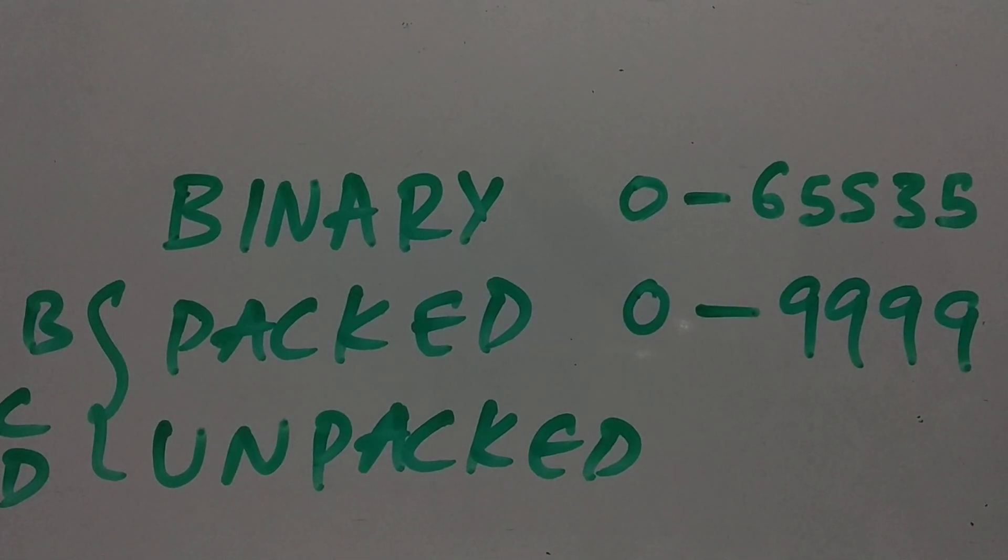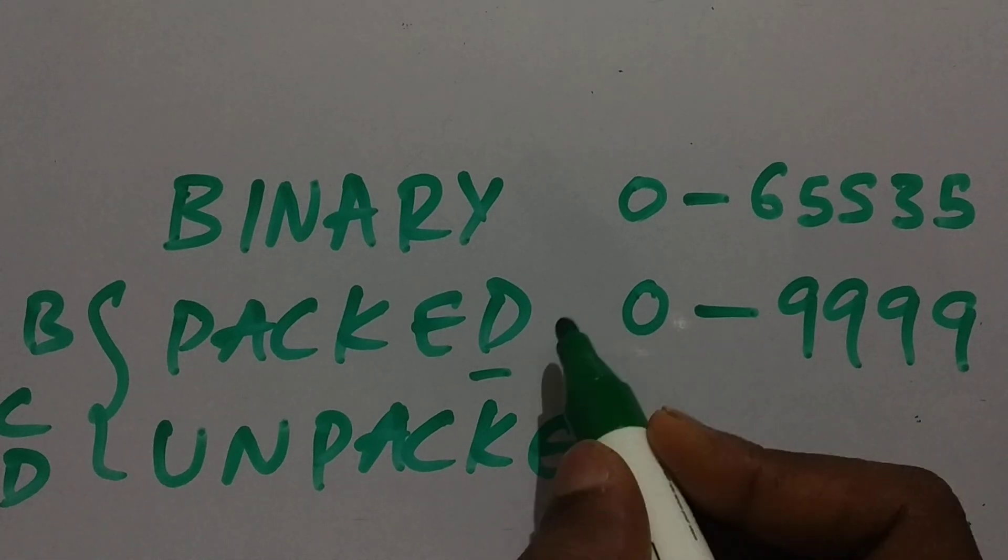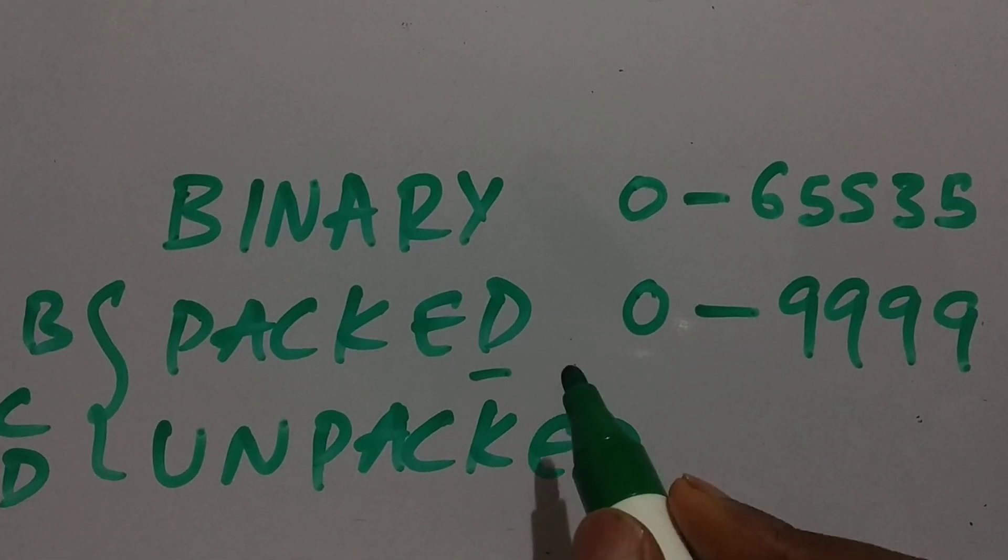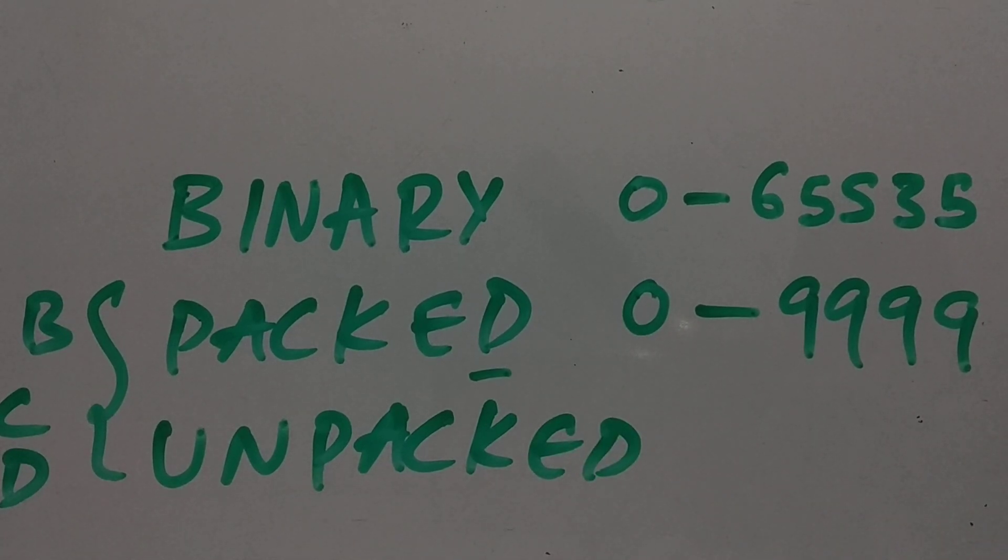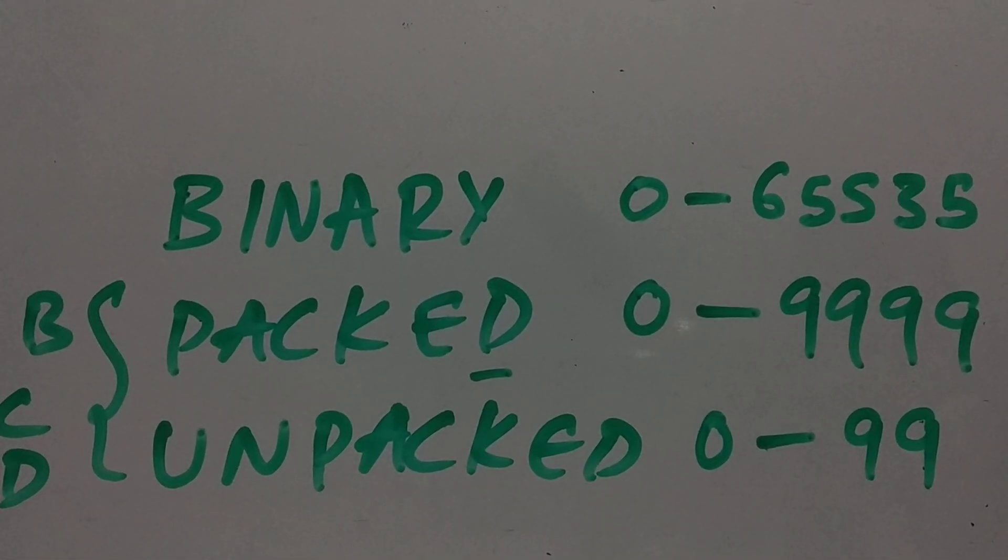For unpacked, it's more complicated. In packed, one byte can store 2 digits, but here in unpacked, one byte can store only one digit. As a result, the range has been reduced significantly. We can store only 0 to 99. As you can see, the storage will be a problem in unpacked and packed compared to binary.